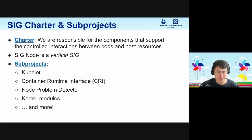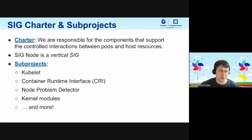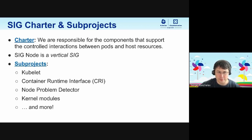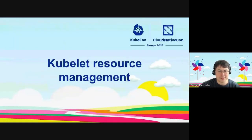Opposed to some horizontal SIGs like SIG Instrumentation, a vertical SIG means we own specific components, and if somebody wants to change any feature touching those components, we need to be involved. We have multiple sub-projects. One of the horizontal sub-projects is the CI sub-project, where we watch for reliability of SIG Node components and look at CI status. We also have sub-projects for specific components: Kubelet, container runtime interface, node problem detector — something that notifies you about issues with your nodes — and many more. With that, I want to pass to Derek, who will go into Kubelet resource management.